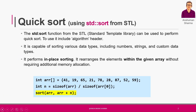In C++, for sorting we have the algorithm header which we have to work with. There is a sort function available in the STL in C++ which we can use to perform quick sort. To use this sort function in code, we have to add the algorithm header file and include it.